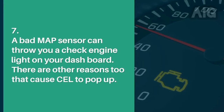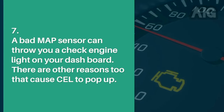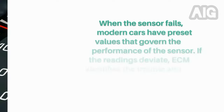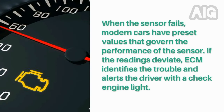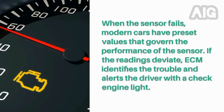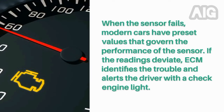Symptom 7: A bad MAP sensor can trigger a check engine light on your dashboard. There are other reasons that can cause this light to appear, but when the MAP sensor fails, modern cars have preset values that govern the performance of the sensor. If the readings deviate, the ECM identifies the trouble and alerts the driver with a check engine light.